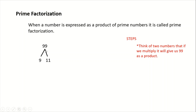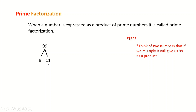In prime factorization, we break up the number into factors until all factors are prime numbers. Notice that 11 is already a prime number, but 9 is still a composite number. Composite numbers are numbers that have more than two factors, while prime numbers have only two factors.